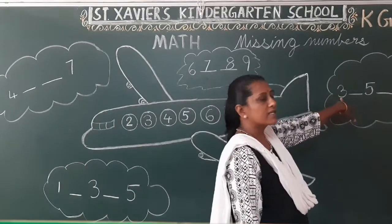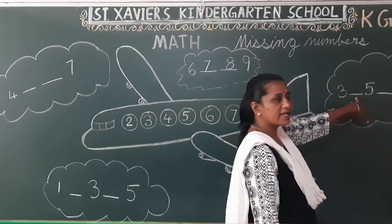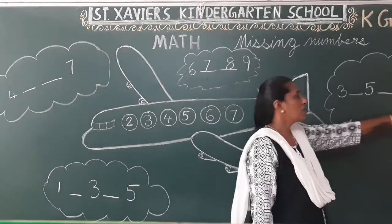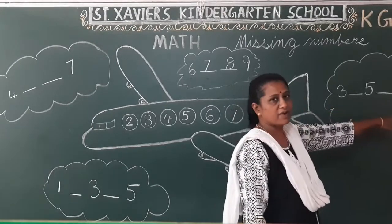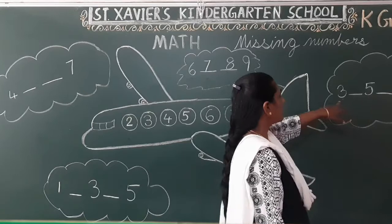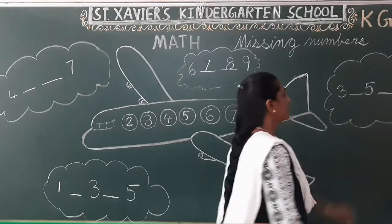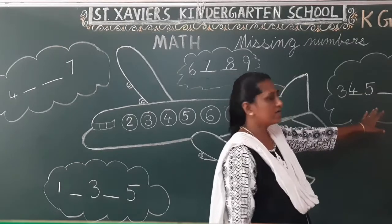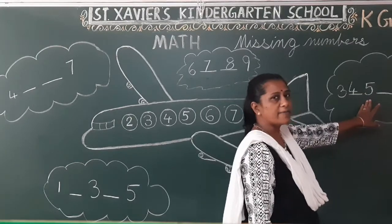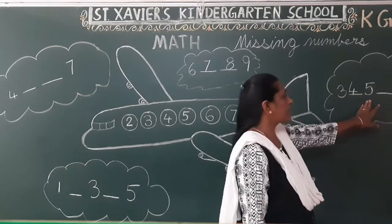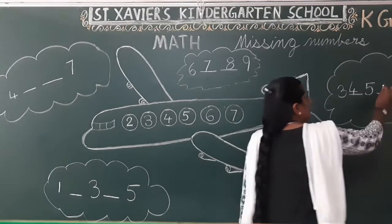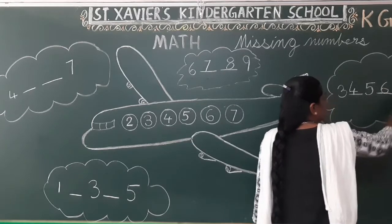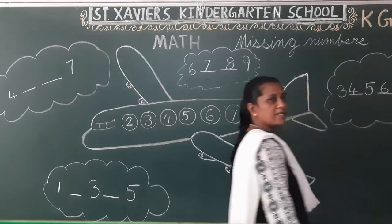Now, what number is this? Three. What comes after three? Five. So: three, two dashes, then eight. What comes after three? Four. What comes after four? Five. What comes after five? Six. What comes after six? Seven. Missing number — eight. After number.